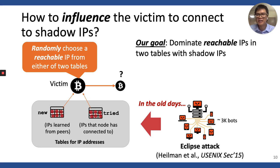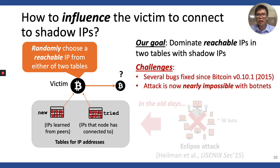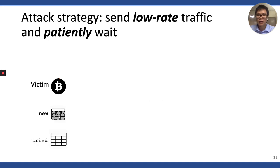In the old days, it was surprisingly easy to do so. A paper at USENIX Security 2015 demonstrates that flooding only 3,000 botnet IP addresses was enough to dominate the tables easily because of some bugs in the Bitcoin client. However, Bitcoin quickly fixed this, and flooding IPs with a botnet is now nearly impossible. So how can the EREBUS attacker still dominate the tried table in the current Bitcoin client? Our attack strategy is simple: the attacker sends low-rate traffic of saddle IPs to the victim and patiently waits for them to fill up the tried table.